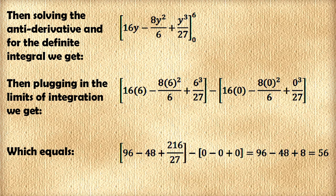Then plugging in the limits of integration, we get 16 times 6 minus 8 times 6 squared over 6, plus 6 cubed over 27, minus 16 times 0, minus 8 times 0 squared over 6, plus 0 cubed over 27.